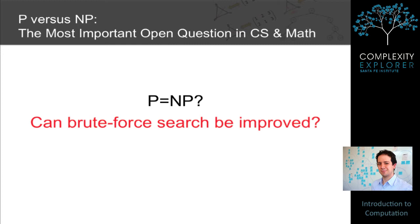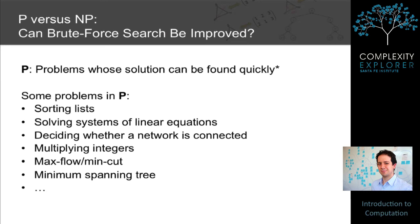It turns out that this is perhaps the most important open question in all of computer science and mathematics. P is the class of problems whose solution can be found quickly — with the asterisk that the formal definition requires the solution to be found in an amount of time that scales polynomially with the size of the input. Examples of problems in P include: sorting lists of integers, solving systems of linear equations, deciding whether a network is connected, multiplying integers, max flow min cut on a network, and finding the minimum spanning tree of a network, among hundreds of others. Note that polynomial time doesn't always mean efficiently in practice — an algorithm taking n to the 10,000 steps is hardly efficient.